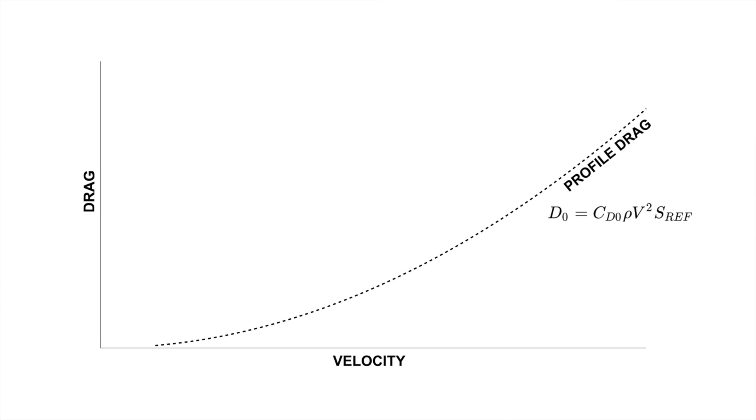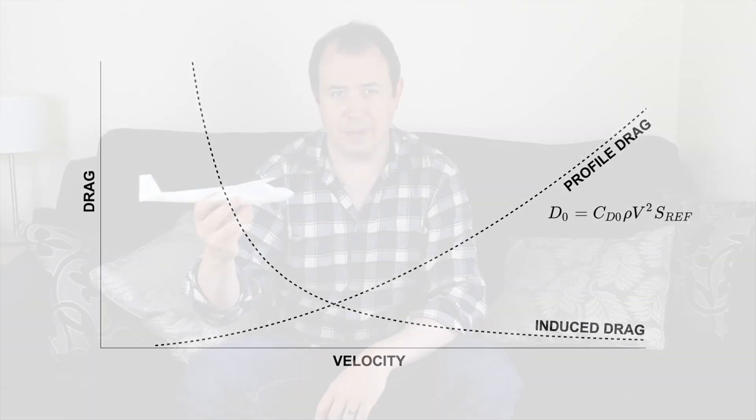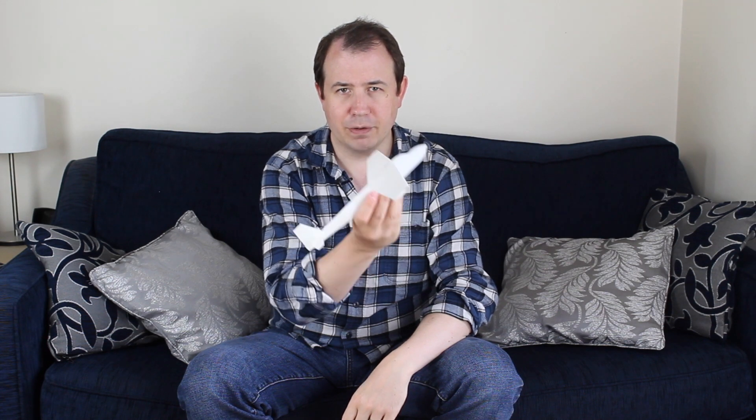Unlike profile drag, lift-induced drag actually gets stronger the slower you get. The slower you get, the more you have to incline the aircraft to the incoming airflow — up until the point where you get what's called a stall, where the airflow separates off the top of the wing and the aircraft can no longer produce lift.